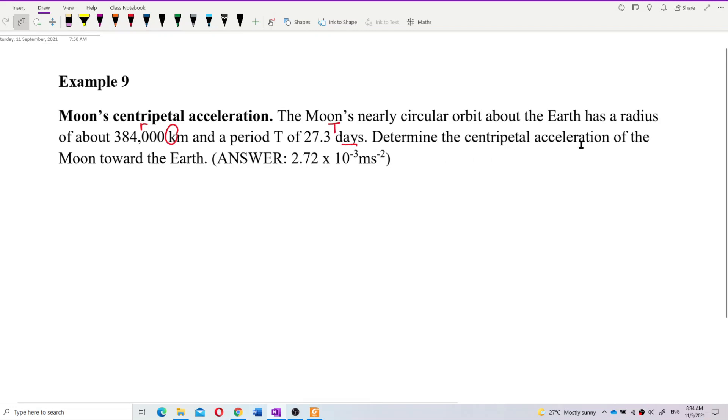This is the period. So find the centripetal acceleration of the moon towards the Earth. The Earth is like the center, center of circle. Okay, the Earth is the center of circle. Now, alright, so how to find the centripetal acceleration? A_c's formula, we have v squared over r, we have also r omega squared and v omega. So we don't have omega, but we have the period, isn't it?